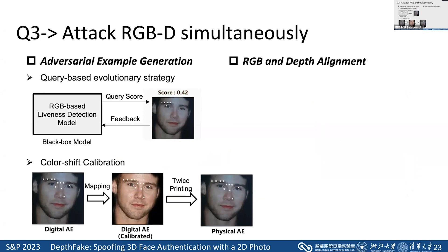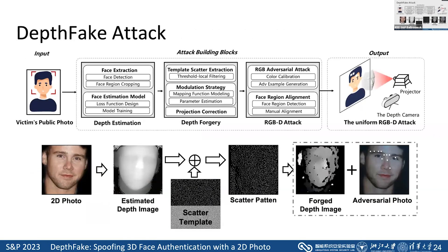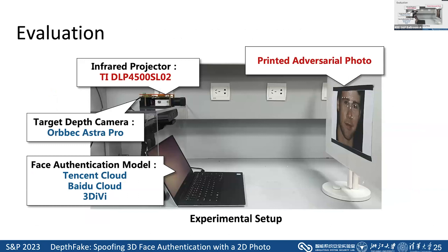After generating the RGB adversarial examples, we use five-key-point mapping to combine the RGB and depth modality to launch the unified RGBD attack. Combining all the above together, we design the DepthFake attack, which includes three key building blocks: depth estimation, depth forgery, and RGBD attack. We then evaluate DepthFake against a commercial depth camera and three commercial face authentication systems, and have disclosed the security risks to the relevant vendors.